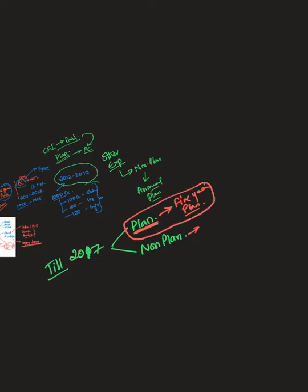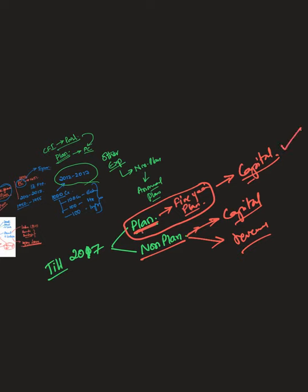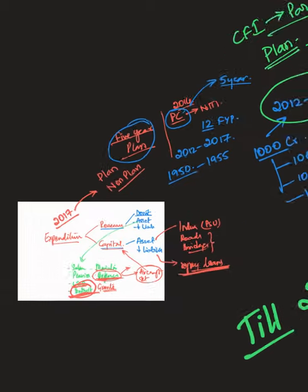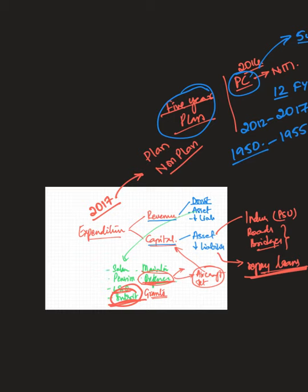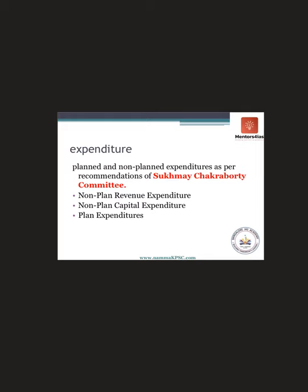It was assumed that all planned expenditures were capital in nature, meaning they created assets. Whereas non-planned expenditures could be classified into both capital and revenue. This gave rise to a threefold classification: planned capital expenditure, non-planned capital expenditure, and non-planned revenue expenditure. This classification was introduced in India on the basis of the recommendation of the Sukhamoy Chakravarty Committee.